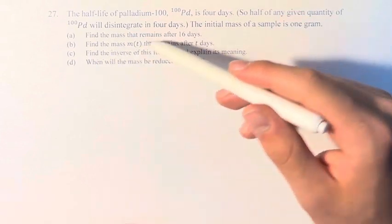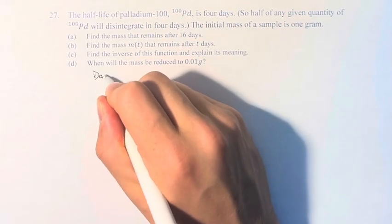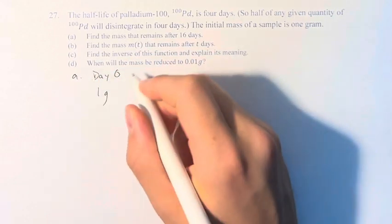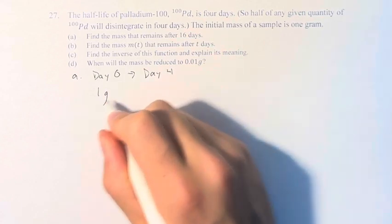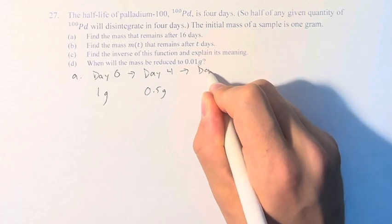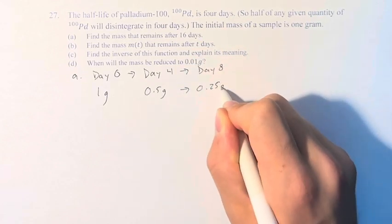So we're asked to find the mass that remains after 16 days. On day 0, we have 1 gram. 4 days later, it's cut in half from 1 to 0.5. 4 days later, it's cut in half again - 0.5 becomes 0.25.